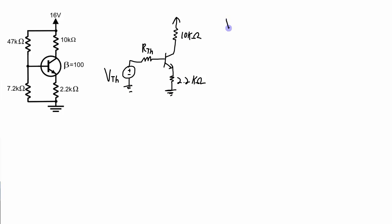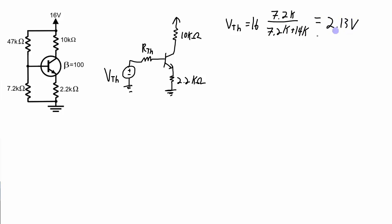The Thevenin equivalent voltage simply comes from the 16 volts getting split between the 47 kilohm and the 7.2 kilohm resistor, and that voltage is going to be 2.13 volts. The RTH is the equivalent resistance seen from this point, and that's going to be equal to the 47k in parallel with the 7.2k resistor.